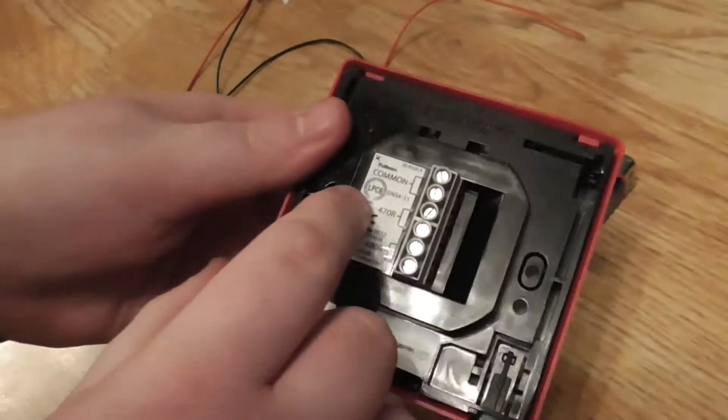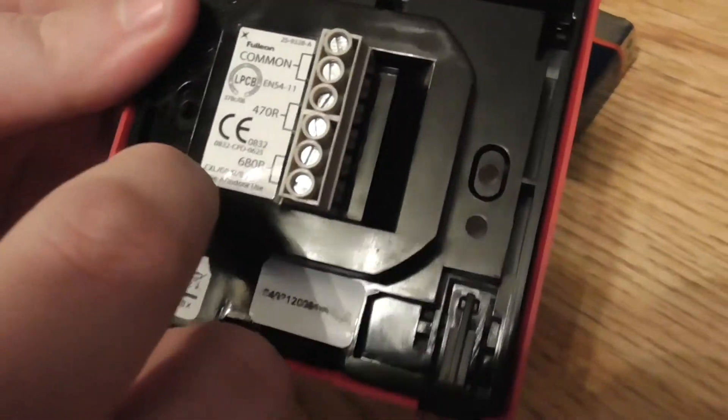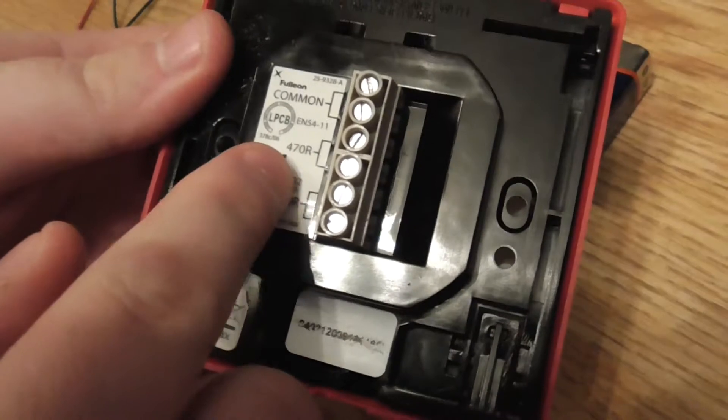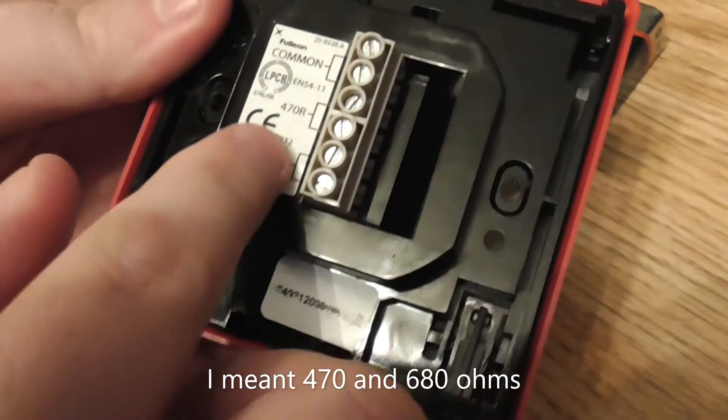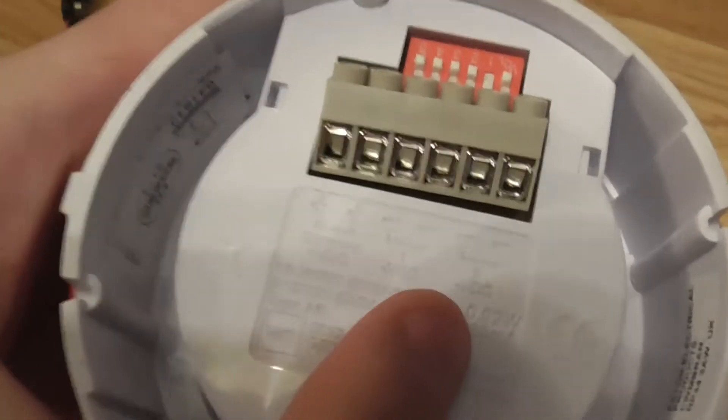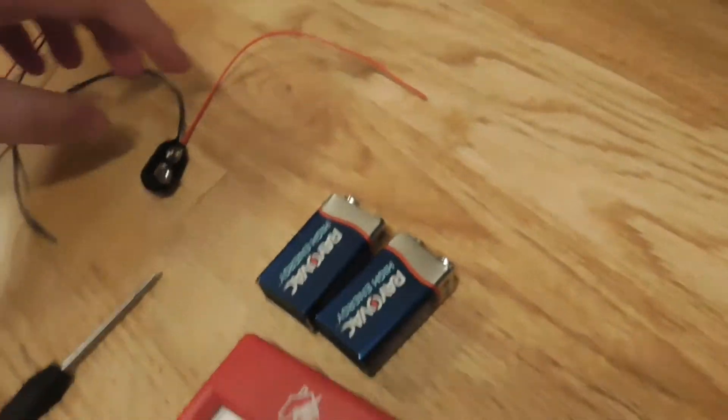So the common has two positive terminals, so the common is positive, and you can either have 470 ohms or 680 ohms for resistance. So either of these negatives will work but I'm going to use the 470. And then for the sounder there's two positives and four negative terminals, so we're just wiring one of these.